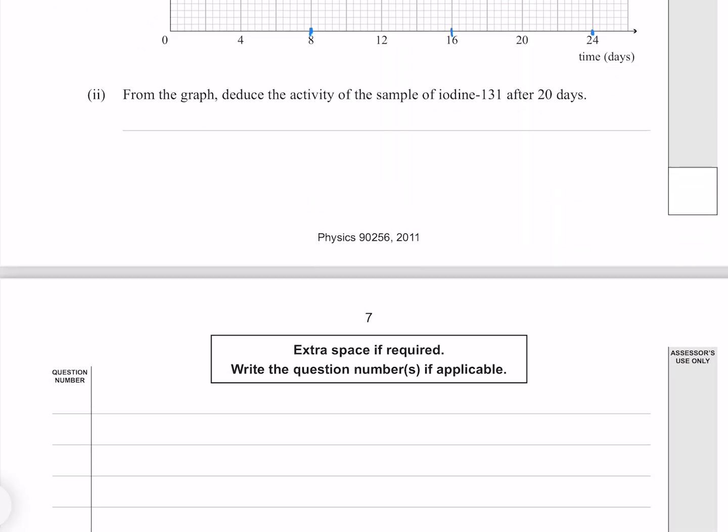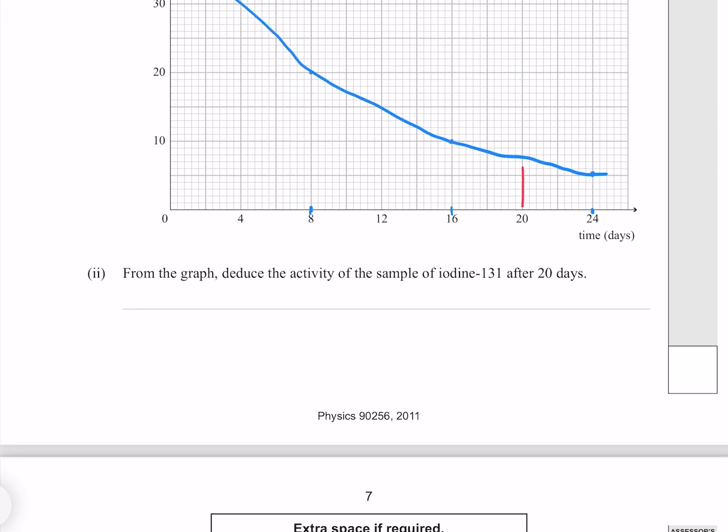From the graph, deduce the activity of the sample of iodine-131 after 20 days. Here is our 20 days, where my curve, which is albeit a little bit wonky, shows a count of roughly 7. The assessment schedule allows for some wriggle room, accepting anything between 6 and 8.